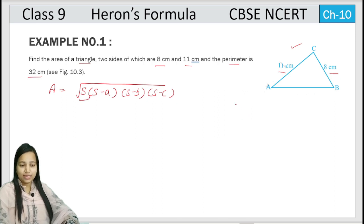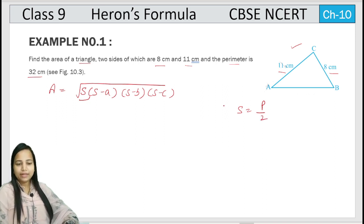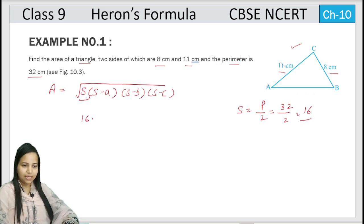So this is the semi-perimeter. S can be found from perimeter by 2, because perimeter is already given. Perimeter is 32 by 2, we got 16. So 16 is the value of S.